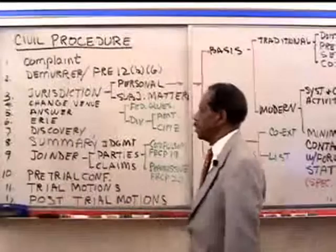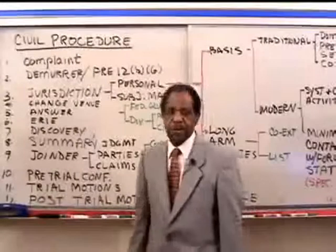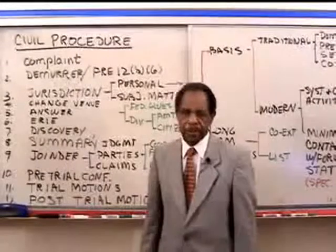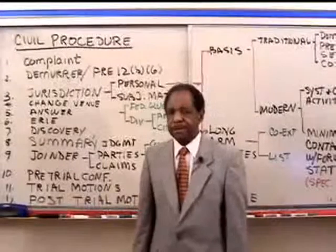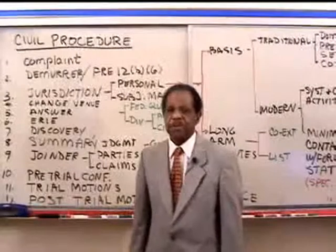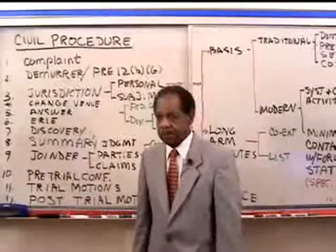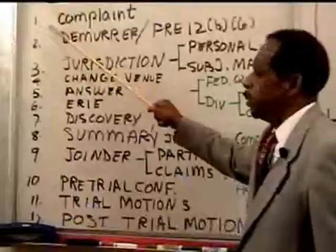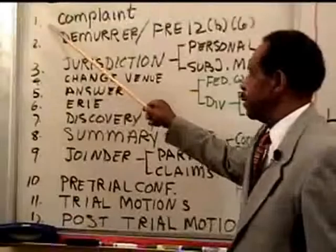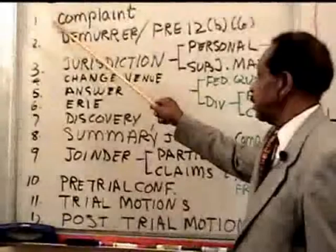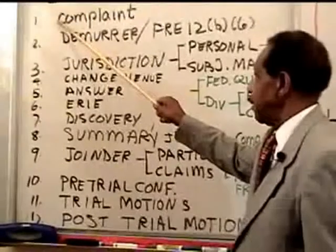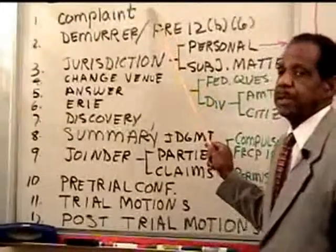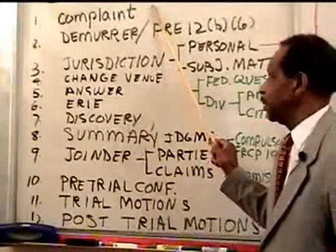Today we are focusing primarily on the federal rules of civil procedure. There will be a separate lecture, as I did with evidence, dealing with the differences between the California and the federal rules of civil procedure. In following a lawsuit from beginning to end, we begin with a complaint. The plaintiff files a complaint. There are things that are required in the complaint, and the bar examiners want to know if you know about those.